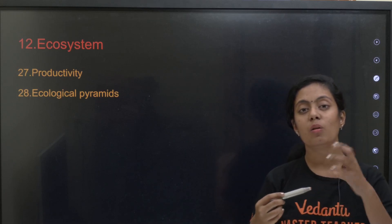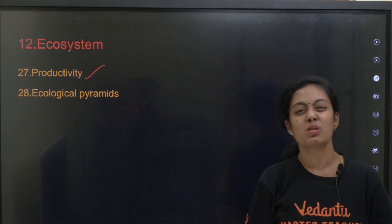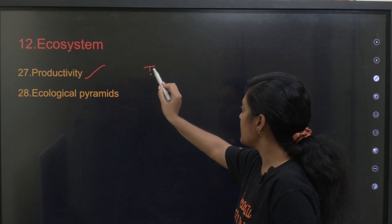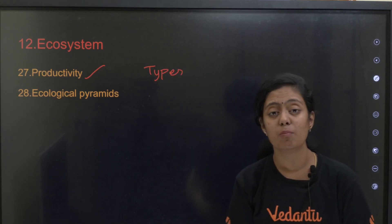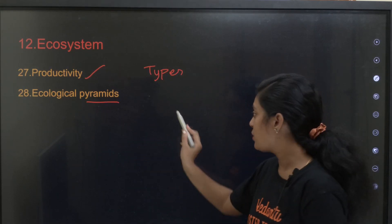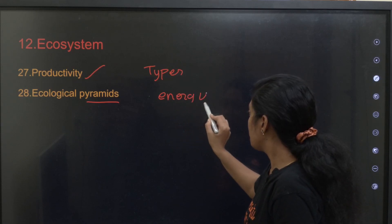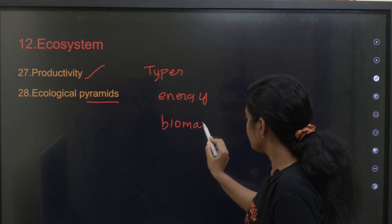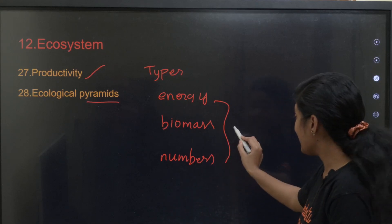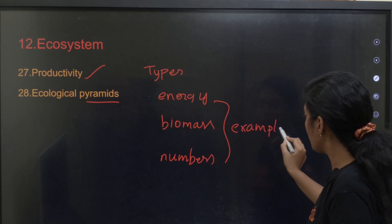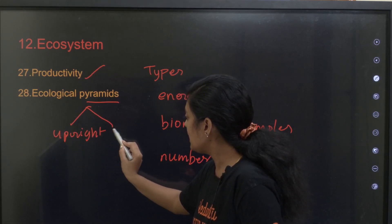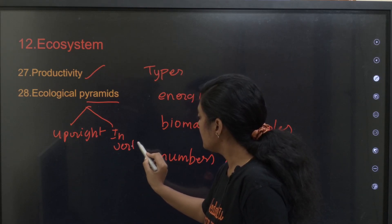In the ecosystem chapter, the most important topic is productivity. The cycles have been removed from the syllabus. For productivity, study the types: primary productivity and secondary productivity. Then ecological pyramids — there are three types: pyramid of energy, pyramid of biomass, and pyramid of numbers. Each pyramid can be either upright or inverted, and you need to be clear on examples of each.